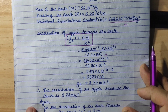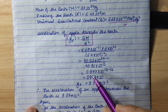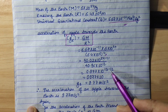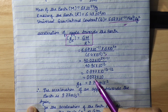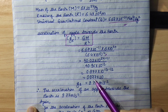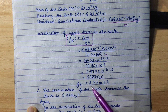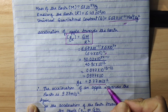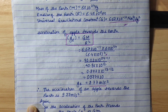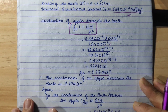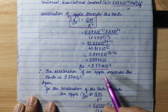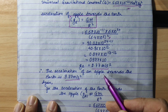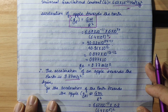Further simplifying: 40.02 divided by 40.96 gives approximately 0.977, and the power is 10¹³ divided by 10¹² = 10¹. So 0.977 × 10 = 9.77. As a conclusion, the acceleration of an apple towards the Earth is 9.77 m/s².